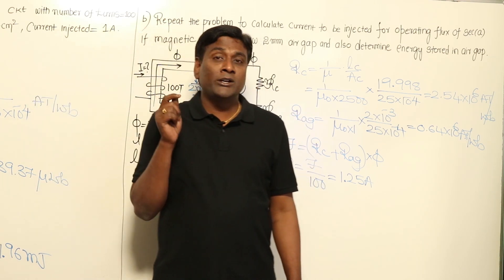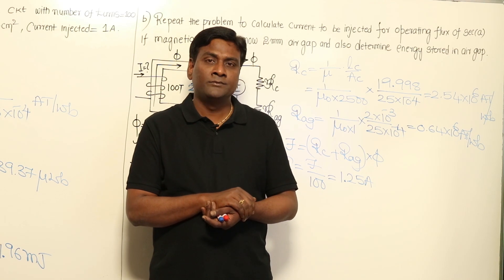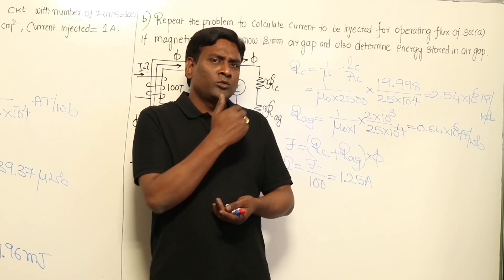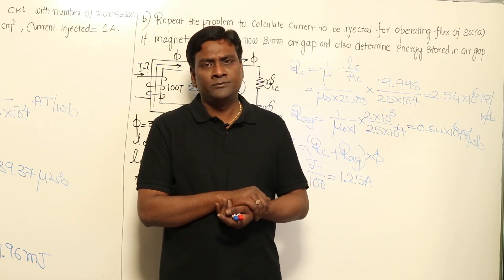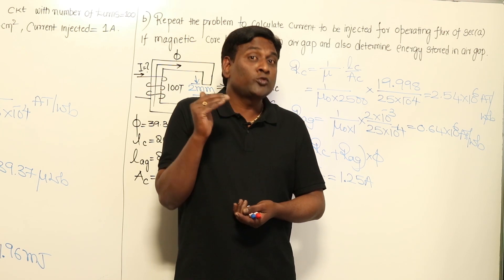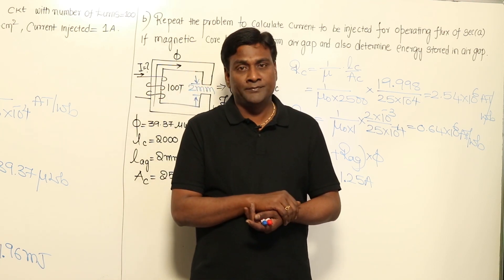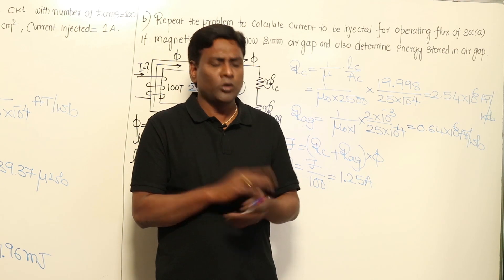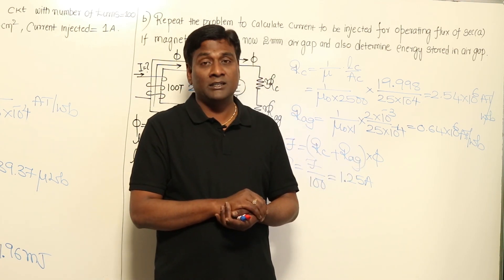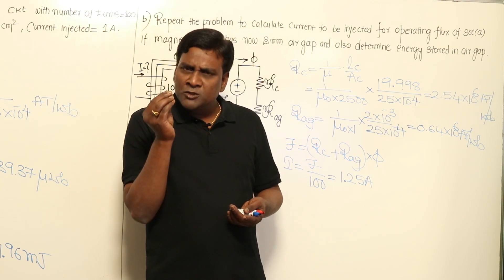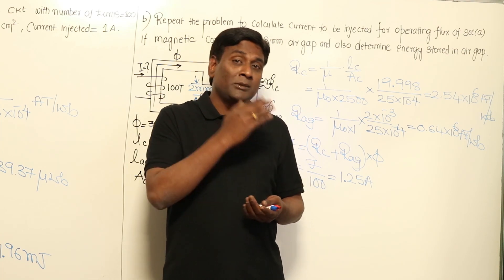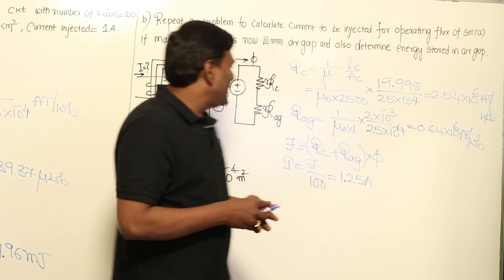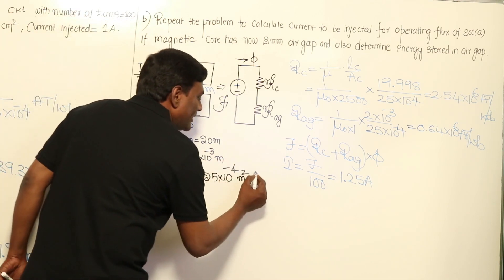Observe the difference: in the previous problem, 1 ampere was sufficient to produce 39.37 micro webers of flux. But in rotating machines, an air gap is compulsory, and to produce the same flux, the current must increase by 25%. That is why the no-load current of a transformer is only 2–6% of full load current, but in an induction motor it is 30–45%, because the induction motor has an air gap.